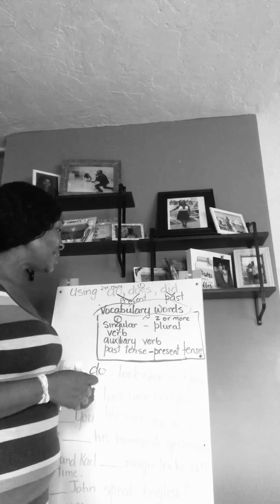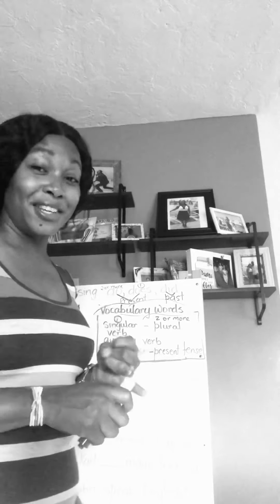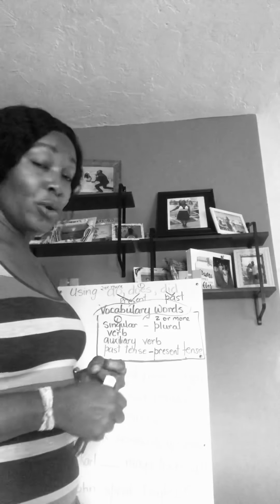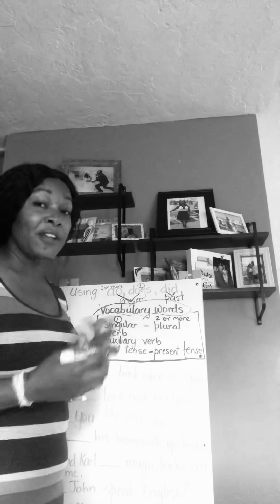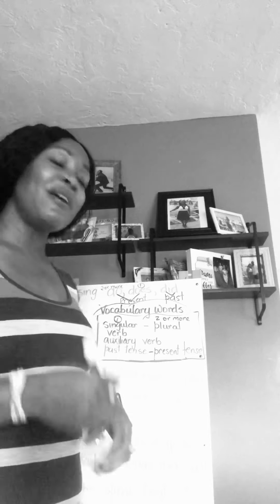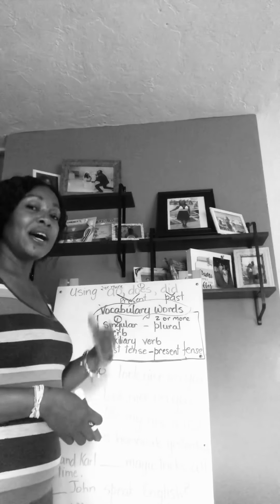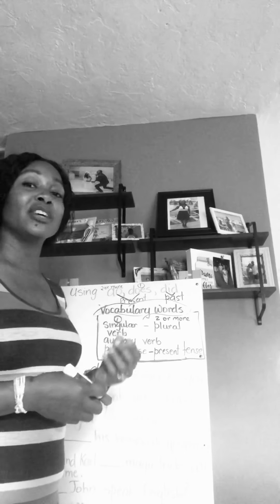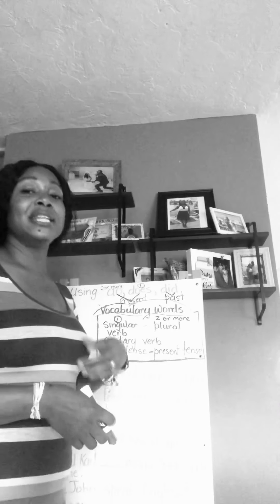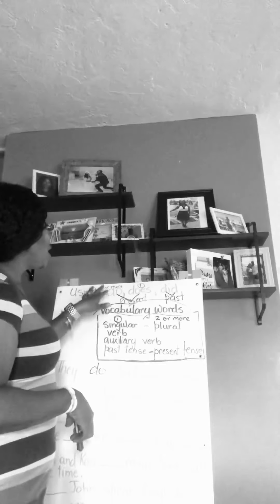Our vocabulary words: singular comes from the word 'single,' meaning one, and plural means more than one — two or more. A main verb is an action, something that we can do. We also have auxiliary verbs — those are helpers, also called helping verbs. They help the main verb so the sentence flows smoothly. Past tense shows an action that already happened; present tense shows an action that is happening now.